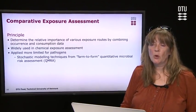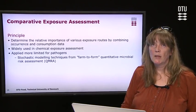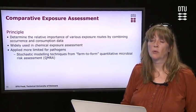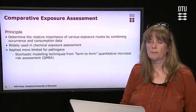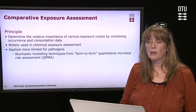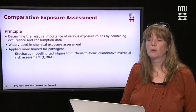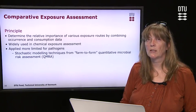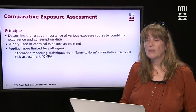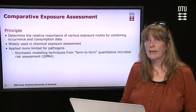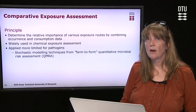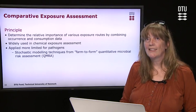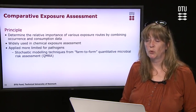The next method is called the comparative exposure assessment. This method determines the relative importance of various exposure routes by combining occurrence or prevalence with consumption or exposure data. It has been widely used in chemical exposure assessment and has been adopted for pathogens, but its use for pathogens is more limited. That is because pathogens are inactivated or can grow through the production chain, making it more difficult to estimate the actual exposure dose.